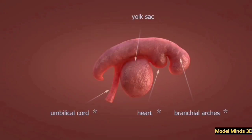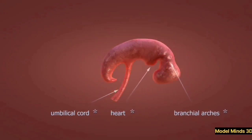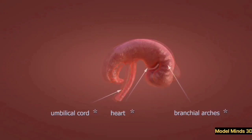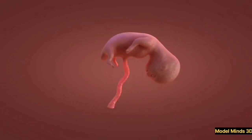At the start of the fetal stage, the fetus is about the size of a grape, but it quickly grows and gains weight. Organs such as the liver, kidneys, and lungs begin to function, and the nervous system continues to develop, allowing the baby to move and respond to stimuli.